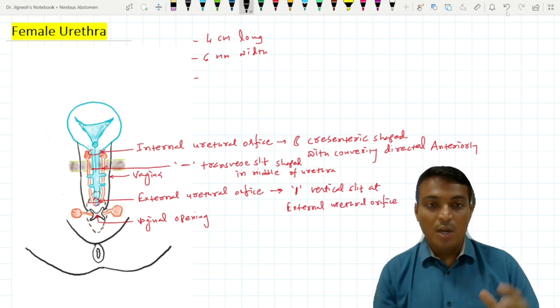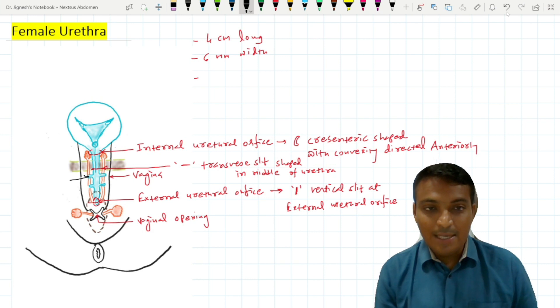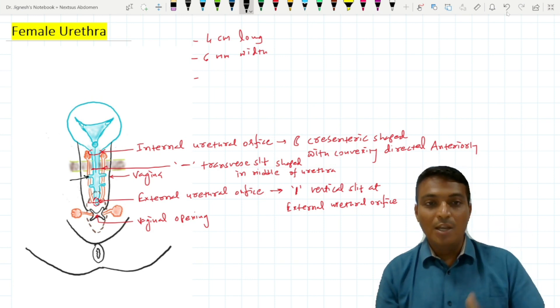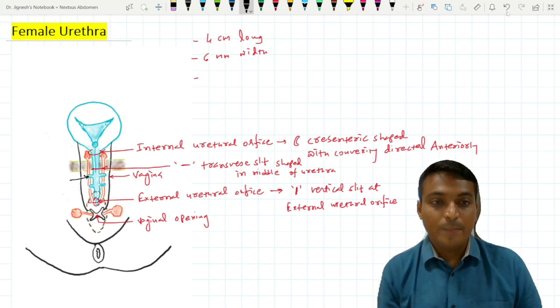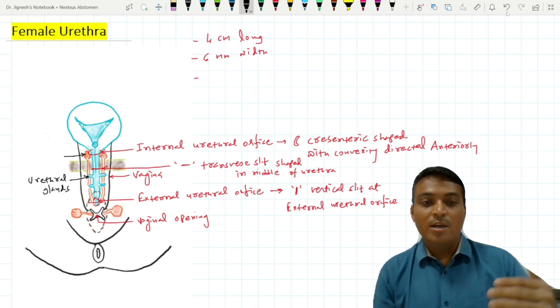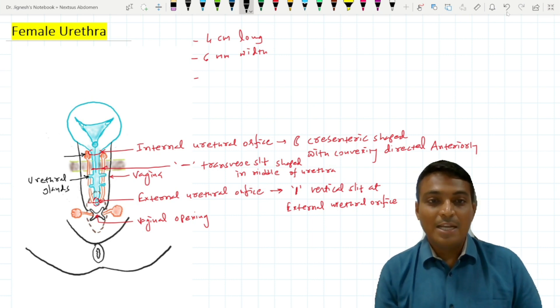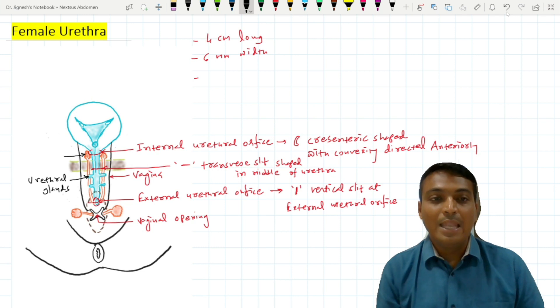There are many urethral glands present and opening into the whole length of the female urethra. Additionally, there are two paraurethral glands of Skene, one on each side, present just above the membranous urethra. These paraurethral glands of Skene are homologous to the prostate of the male.